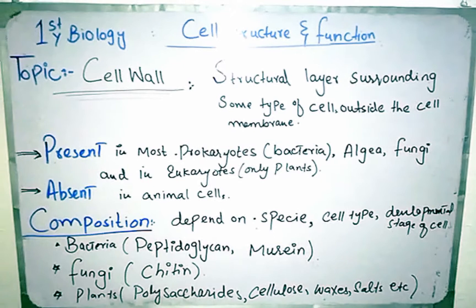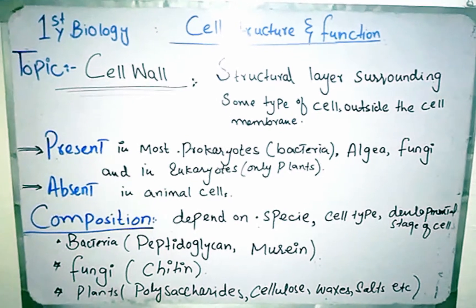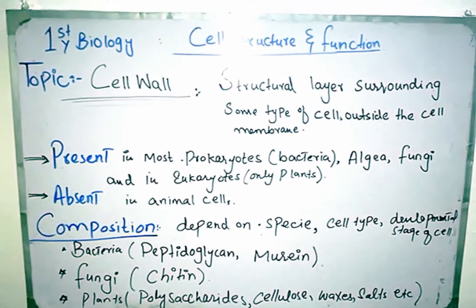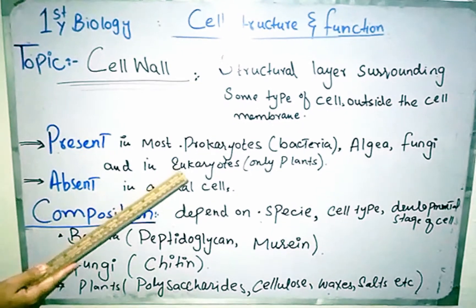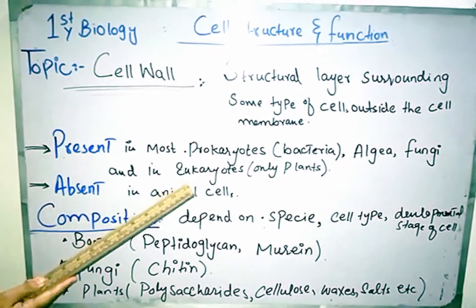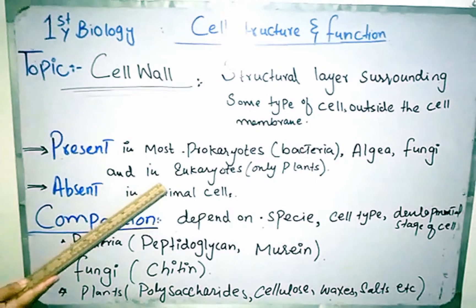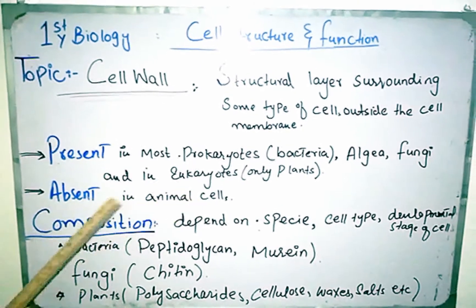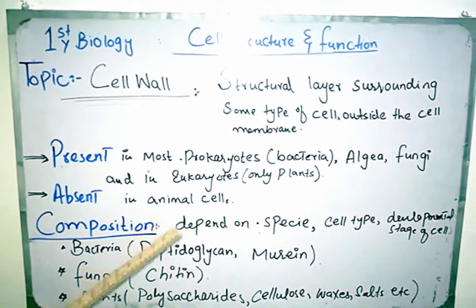Cell wall is the structural layer surrounding some types of cells, located outside the cell membrane. It is present in most prokaryotes like bacteria, and also present in algae, fungi, and in eukaryotes only in plants. It is absent in animal cells.